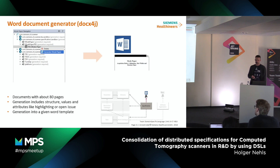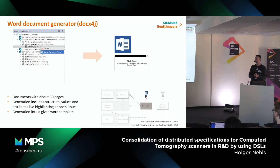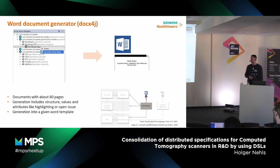As mentioned, we have a word generator which can be called easily. The result is documents of about 80 pages. It includes not only the structure but also the parameters with their values and some attributes like color highlighting for representing changes between the last version, and open issue annotations. There was a challenge to fill our given Word template, which is defined by our process team and has some variables for Word macros. That's why we introduced the specification concept, and we used docx4j to fill the Word-readable format.